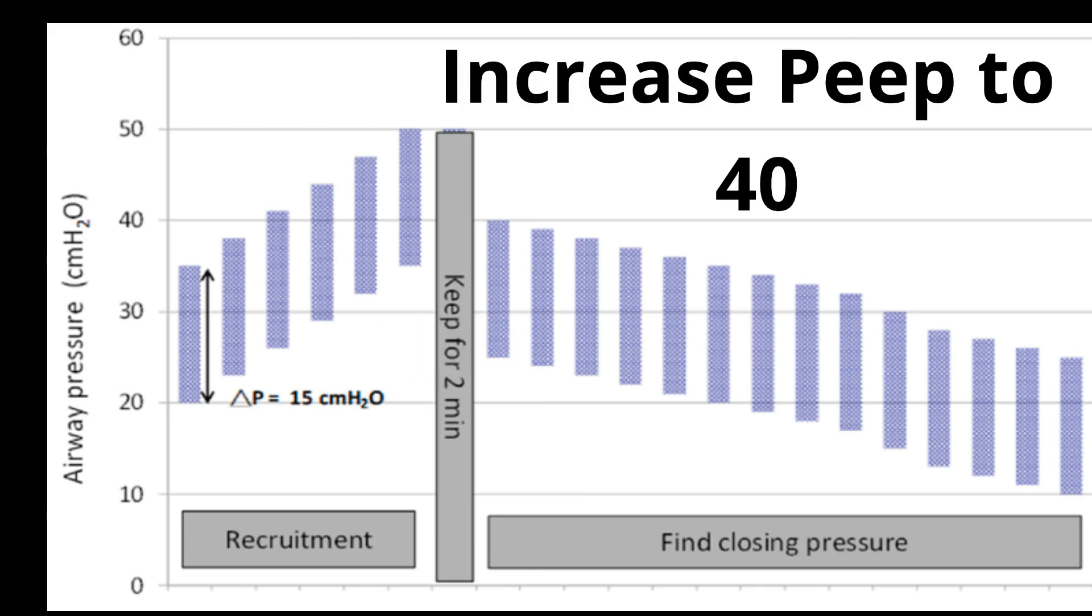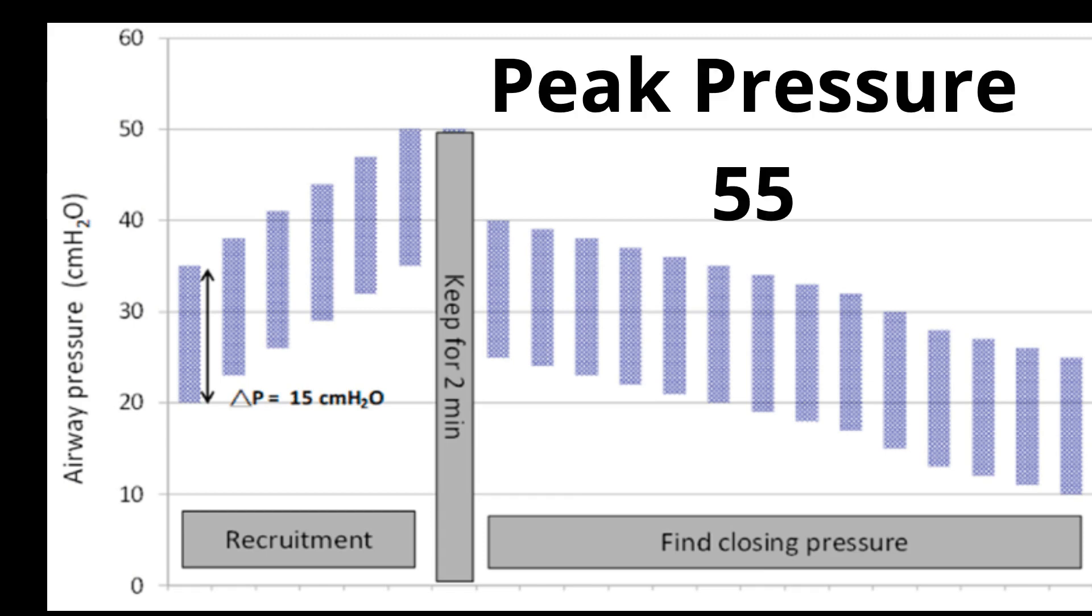Then increase PEEP in a stepwise manner to 20, then 30, and then 40 cm water with adjustments made every 2 minutes, that is peak pressure will reach 55 cm water.